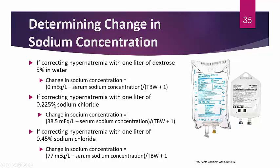For 0.45% NaCl: change in serum sodium concentration = (77 − serum sodium) ÷ (TBW + 1). Always include parentheses properly when applying these formulas — this will also be corrected in the online PowerPoint.